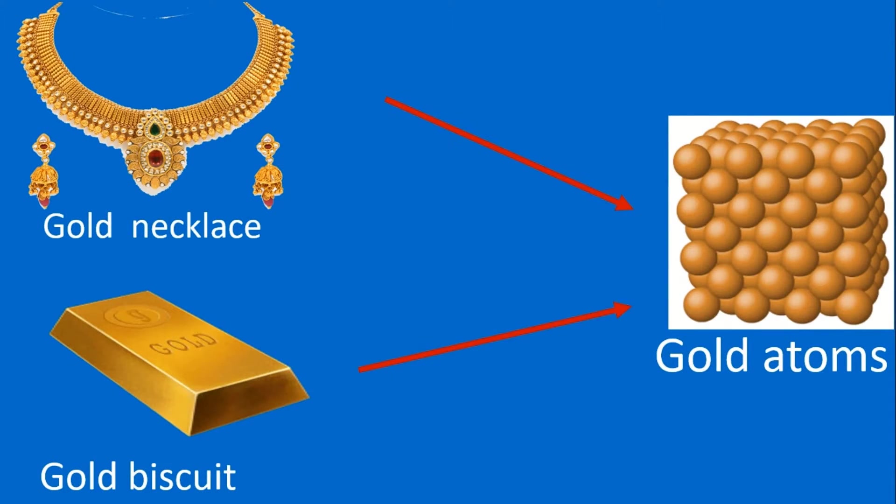Likewise, the smallest unit in a gold substance is an atom.